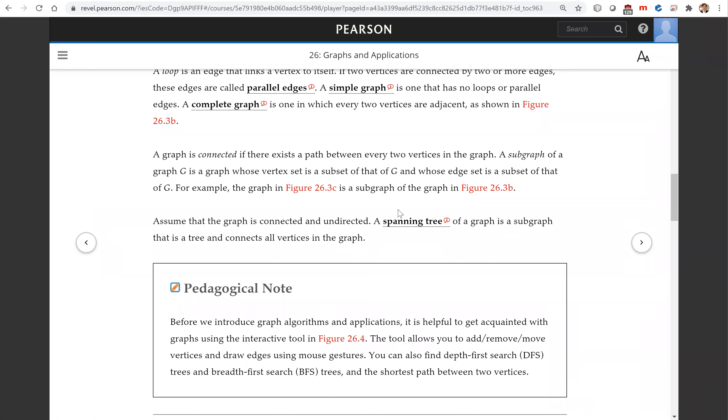Assume that the graph is connected and undirected. A spanning tree of a graph is a subgraph that is a tree and it connects all vertices in the graph.